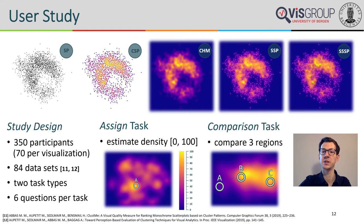Participants saw a set of instructions and a practical trial including the correct answer at the beginning. They then had to perform two tasks and pass two attention checks, each task consisting of six questions. In the assigned task, users had to estimate the density value of an interval between 0 and 100 in a highlighted region, where 100 corresponds to the densest point and 0 to the sparsest. The error was computed as the difference between the participant's answer and the average per-pixel density within the highlighted region. In the comparison task, we highlighted three regions A, B, and C, and asked which region contains the highest or lowest density, or if all regions have the same density.